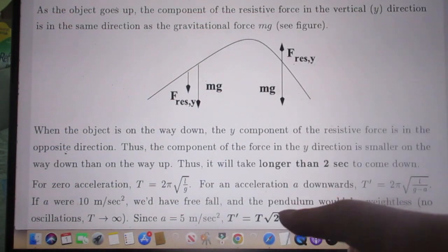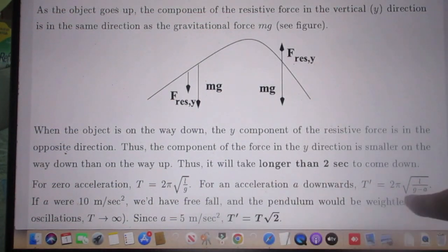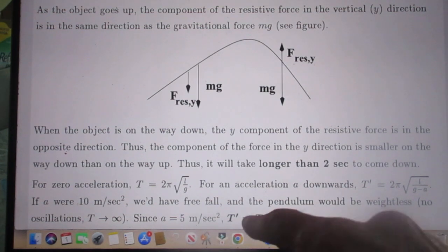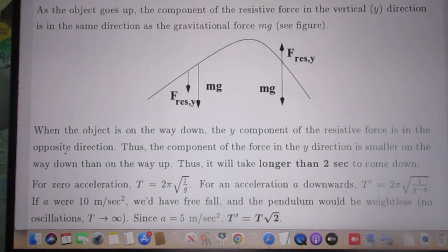The period of a pendulum is 2π times the square root of L divided by G minus A. And G minus A is 5. And when it was not being accelerated it was 10. So it's obvious that T prime is the square root of 2 times larger than T. If the elevator were accelerated upwards then the period of oscillations would be shorter than T. But now it is larger.